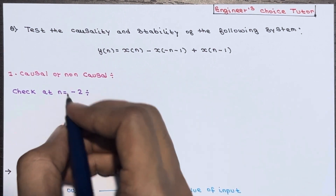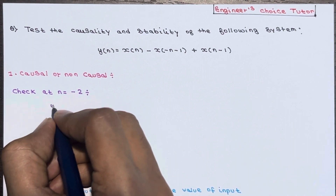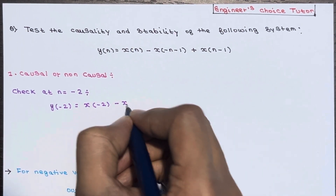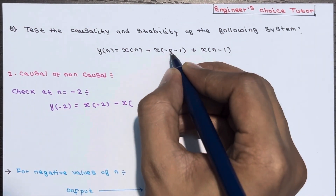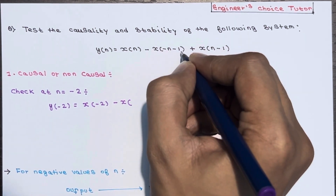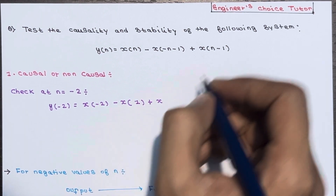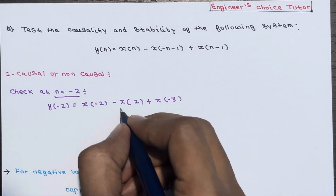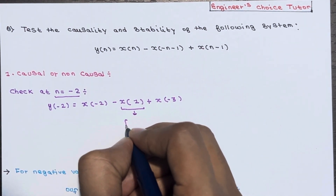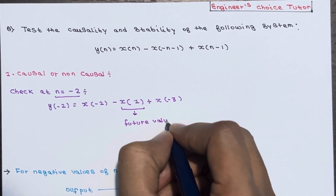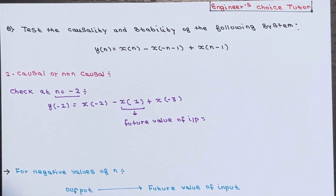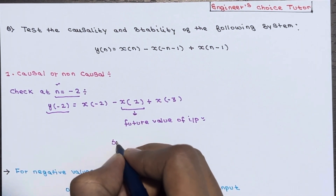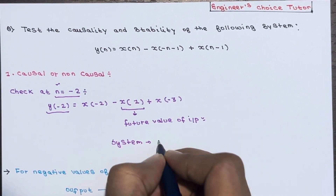Check at n = -2. I pick one instance n = -2 and will check at this instance. So y(-2) is equal to x(-2) minus x(-(-2)-1) plus x(-2-1). It will become x(-2) minus x(1) plus x(-3). You are at n = -2, but you need x(1) also, meaning your output depends upon future values of input.